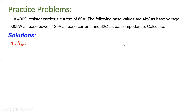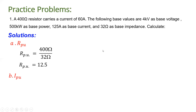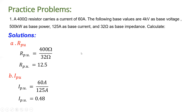For the per unit resistance: 400 ohms divided by the base impedance of 32 ohms gives 12.5. For the per unit current: the equation is actual current divided by base current, so 60 amperes divided by 125 amperes gives 0.48. Remember, there is no unit for per unit resistance or per unit current.